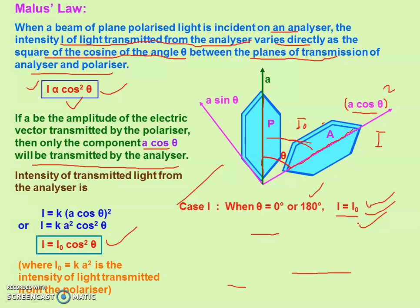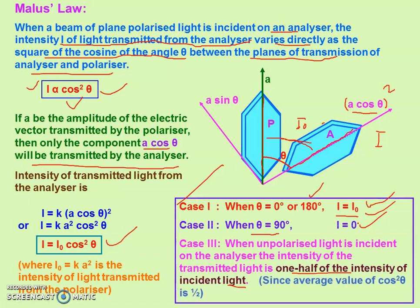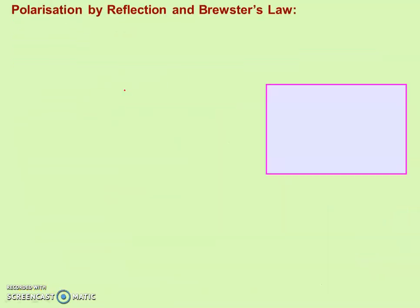In the board examination, you will get at least one question from the Law of Malus, typically in the form of numericals. Now, polarization by reflection and Brewster's Law. These are two media, A and B. Unpolarized light — meaning light in which the electric vectors are vibrating in all possible directions — is incident at this interface at the polarizing angle.